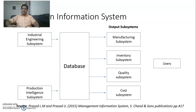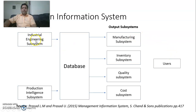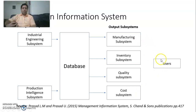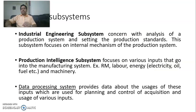If we see the production information system diagram or model, there is input, then database, then output, and the users. In PIS there is an industrial engineering subsystem and a production intelligence subsystem. Both contribute to the database of PIS. From this database, output subsystems provide manufacturing, inventory, quality, and cost subsystems, giving different information to production managers and personnel for decision making.